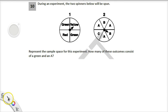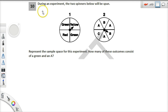Hey scholars, so this is a probability question. During an experiment, the two spinners below will be spun. Represent the sample space for this experiment. How many of these outcomes consist of a green and an A? So sample space is like every possible outcome, right?